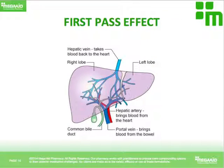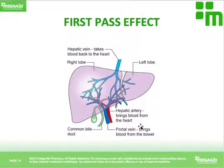Now let's look at the first pass effect. First pass effect refers to pre-systemic drug metabolism by the liver as a drug passes through it via the portal vein. The liver is an amazing organ — it receives blood supply from two sources: the portal vein, which brings blood from the gastrointestinal system, and the hepatic artery, which brings blood from the heart.